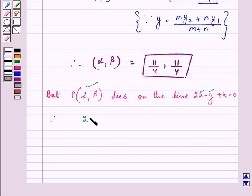So therefore, we have 2 into X, that is 11 by 4, minus 11 by 4 plus K equals 0. This further implies that we have 11 by 2 minus 11 by 4 plus K equals 0.